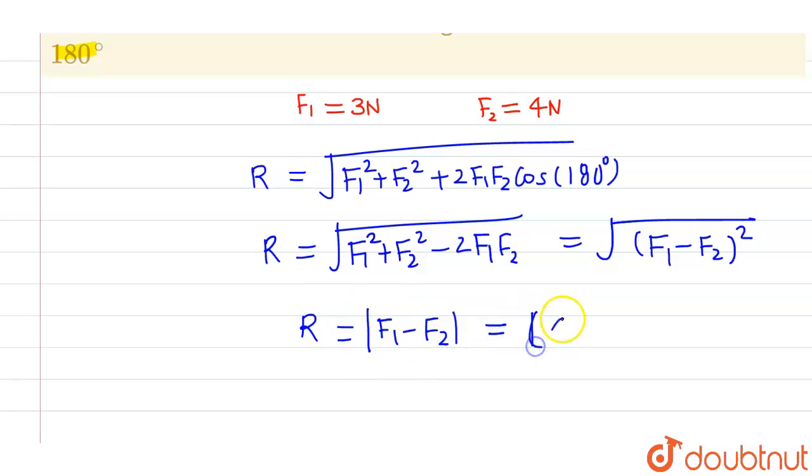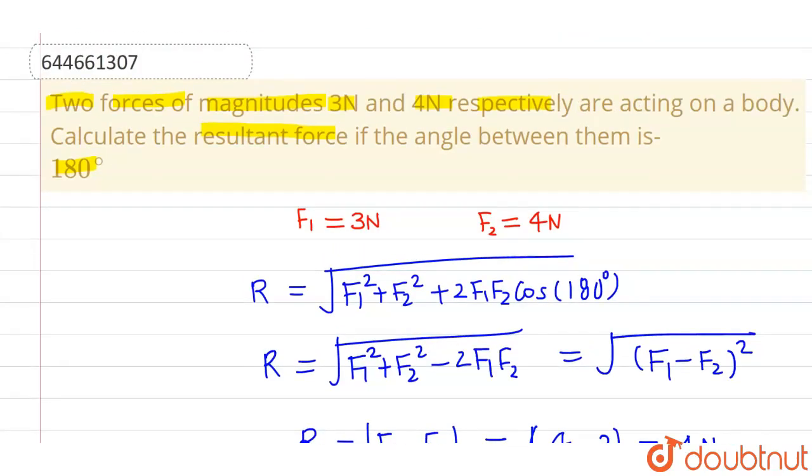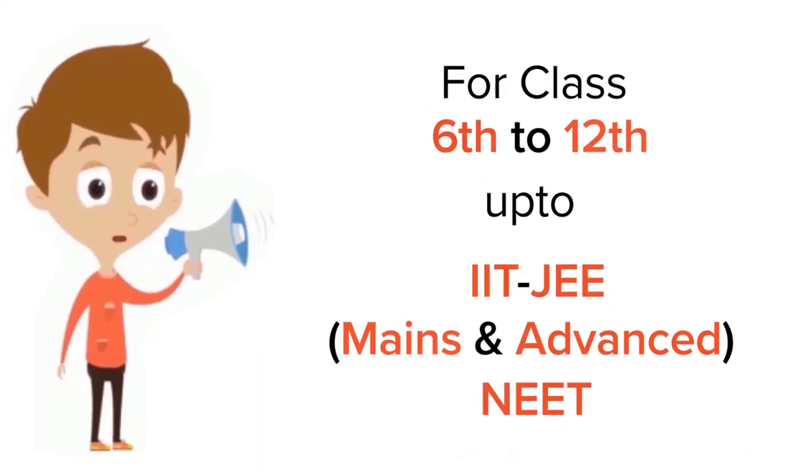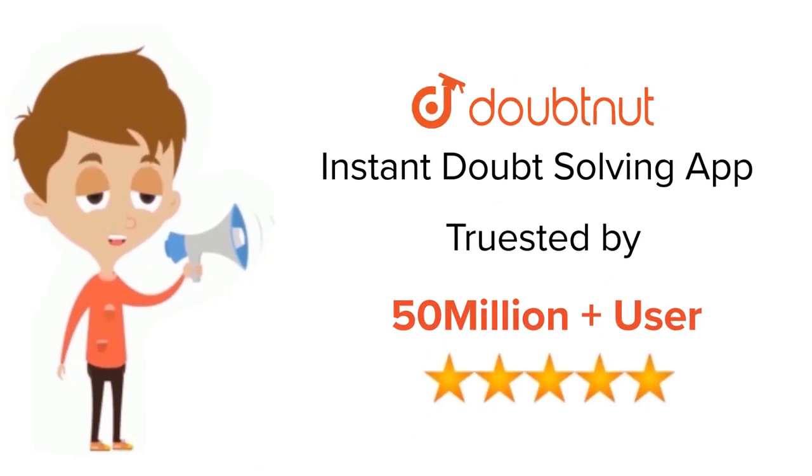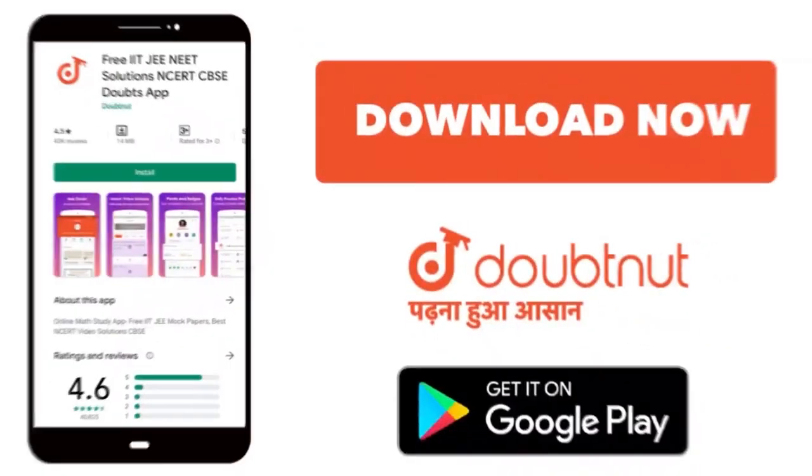When the angle between them is 180 degrees, the resultant is 1 newton. I hope you understood, thank you. For class 6th to 12th, up to IIT-JEE and NEET level, trusted by more than 5 crore students. Download Doubtnet app today.